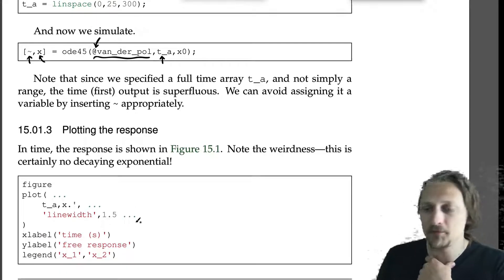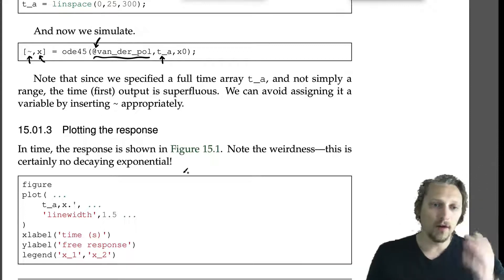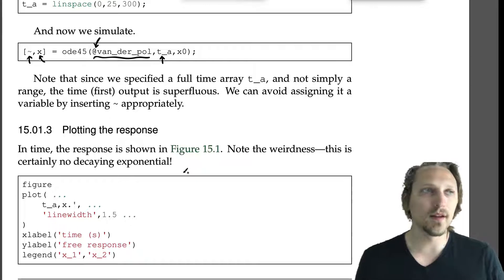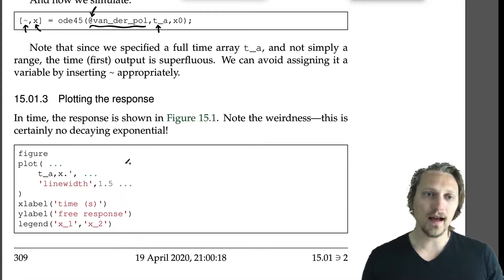I don't need the time array out because it's just going to be exactly the same as the time array that I put in, so I just put this tilde in there which ignores the assignment of that variable. And I assign to x the output of this ODE45. I give it my function handle—which you have to use the @ at the beginning, that's important—and then time array, initial conditions.